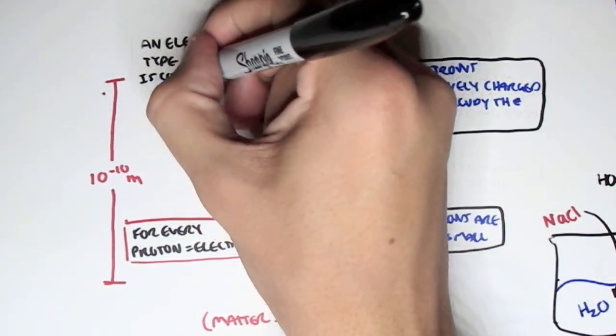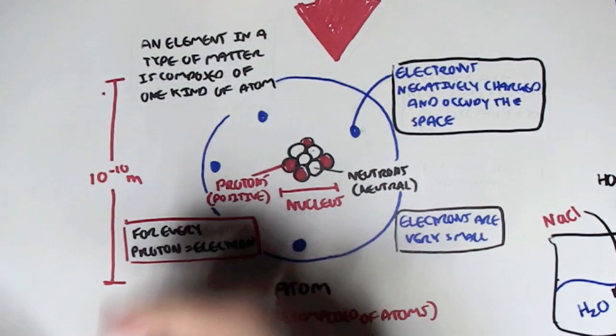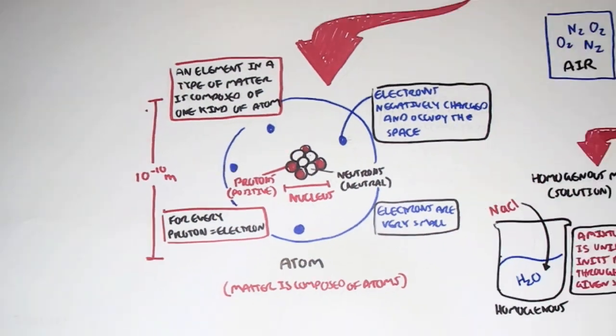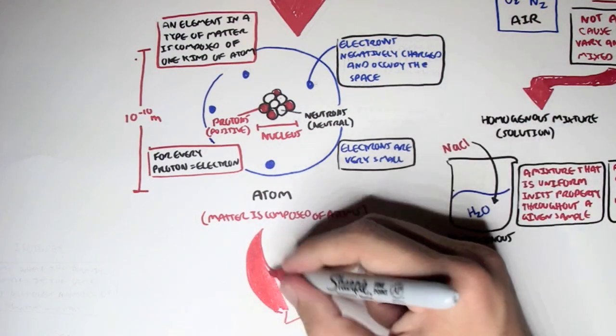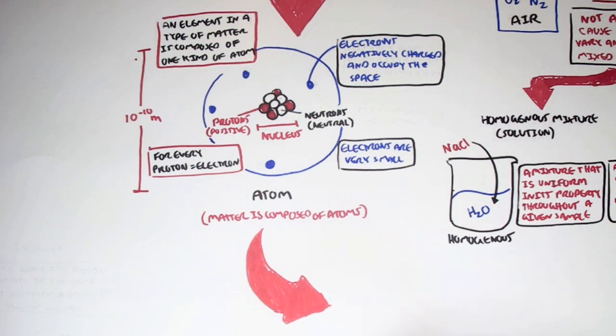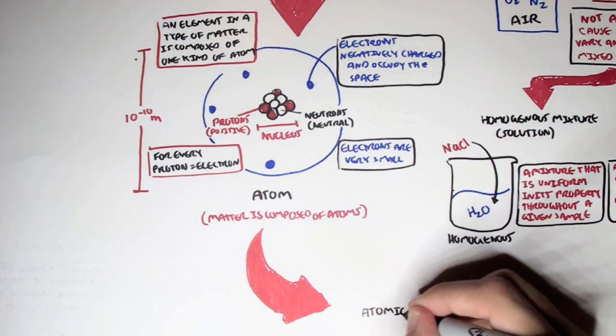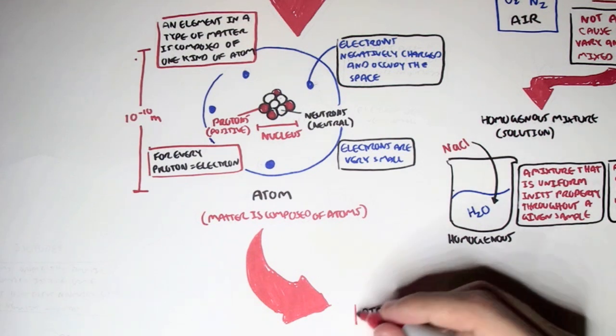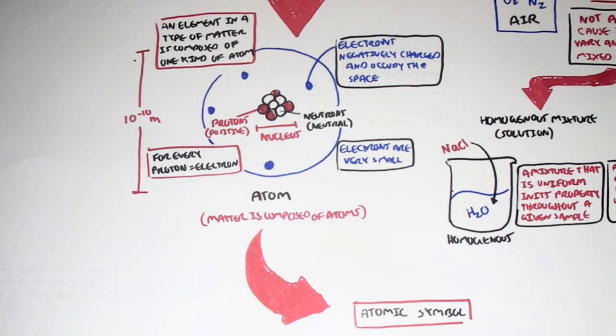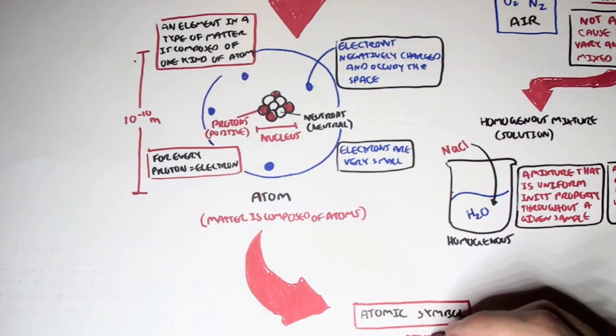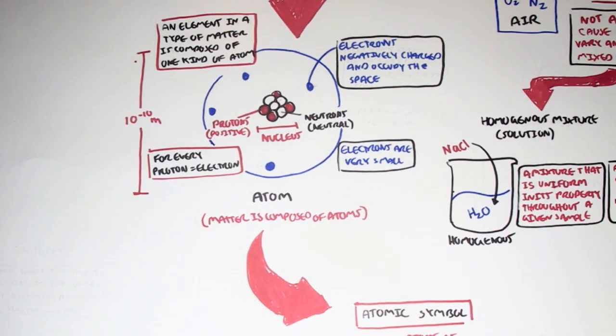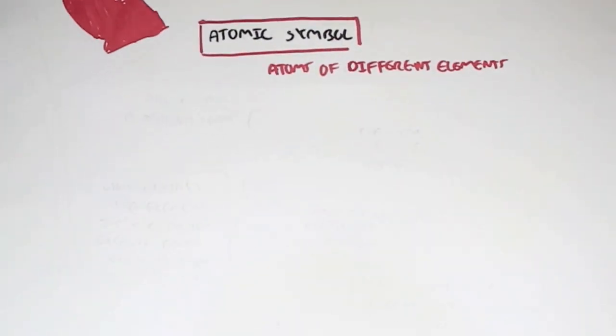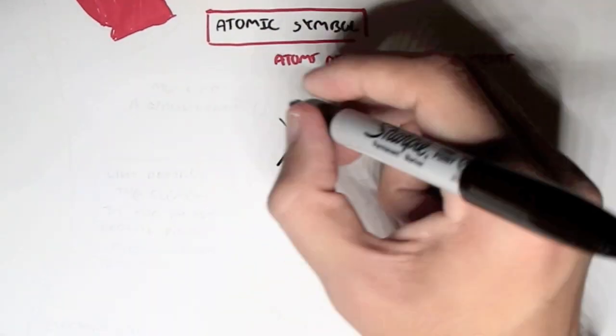Another important thing to remember is that an element in any type of matter, such as an element in wood, each element in that wood is composed of only one type of atom. And that is why atoms are unique. So knowing that each element is composed of one type of atom, how can we define between atoms? So now let's look at the atomic symbol for this.